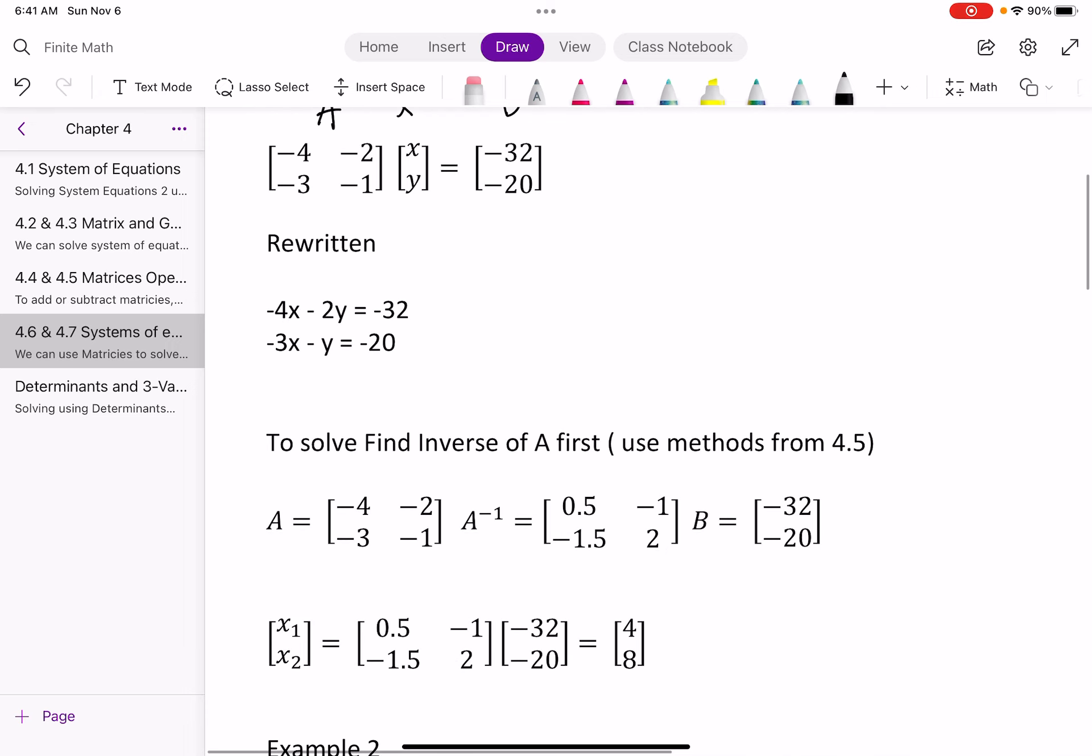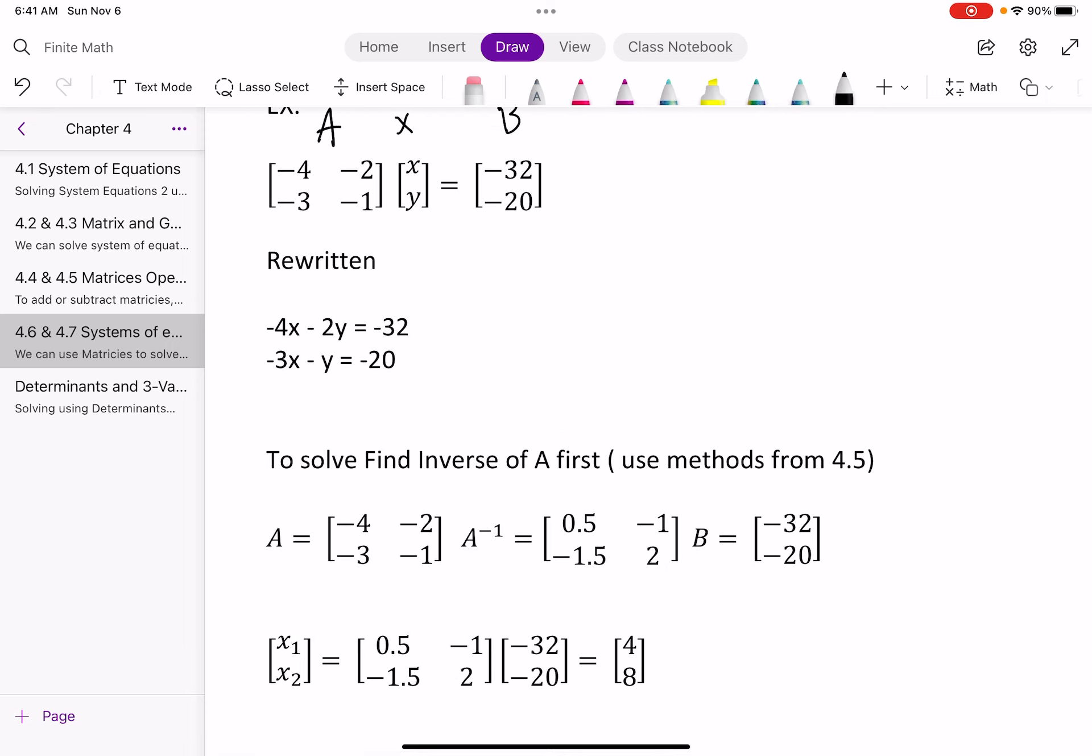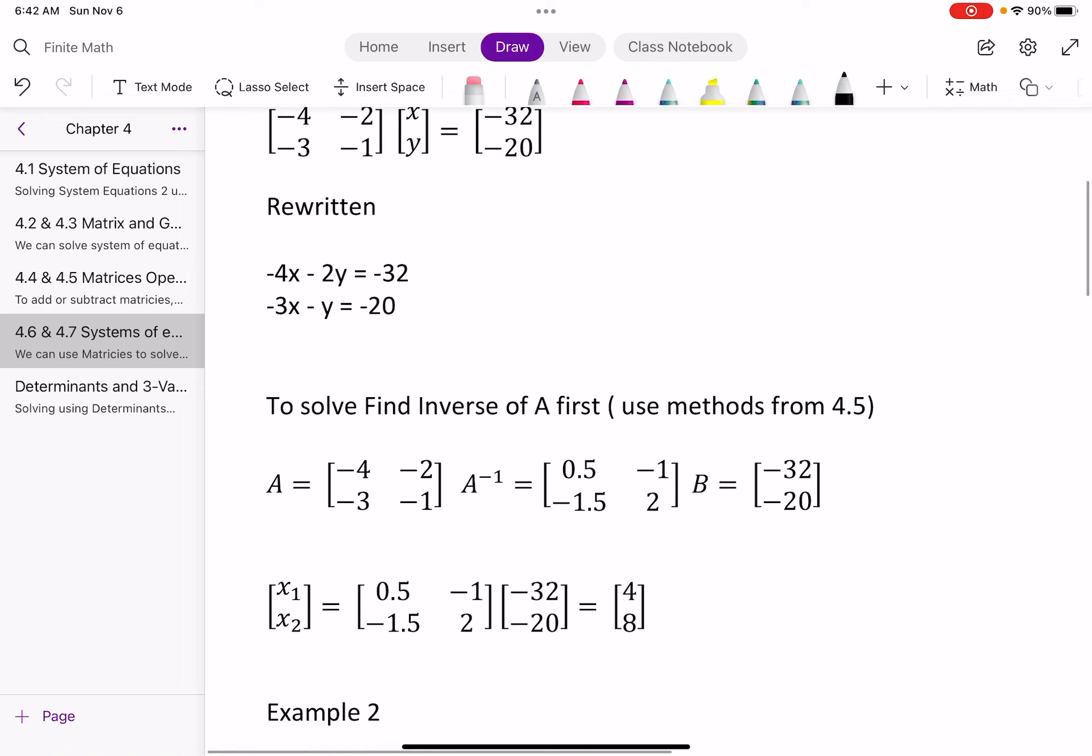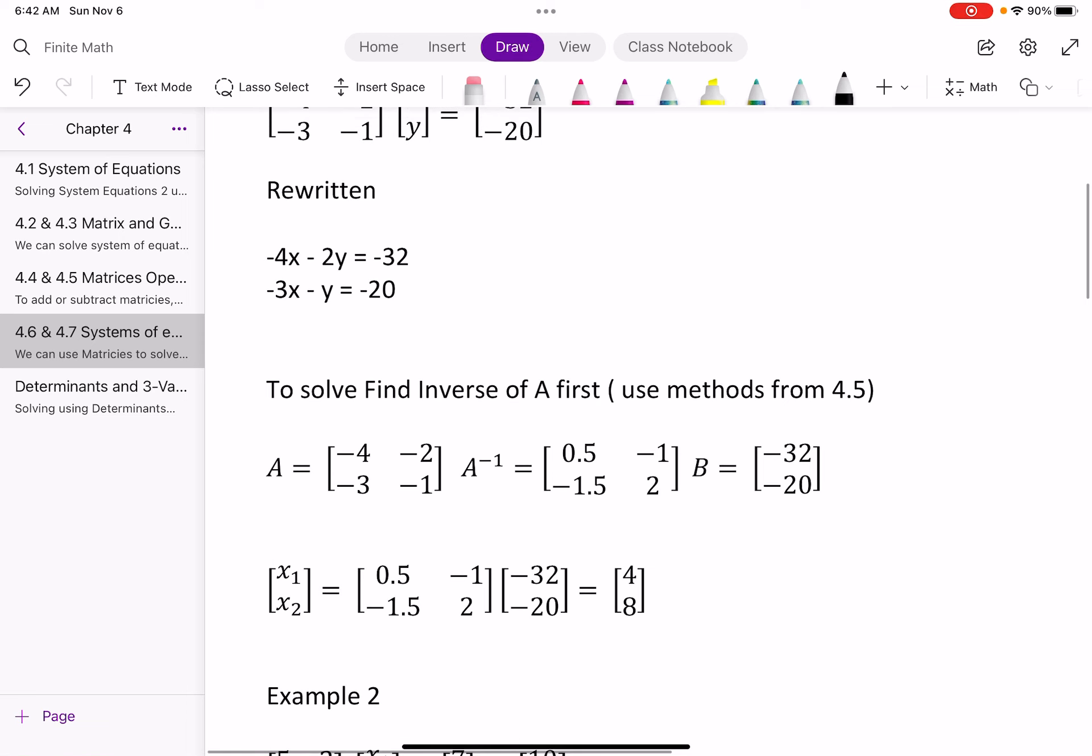And now to solve this, I can go back where I was. So A equals negative 4, negative 3, negative 2, negative 1. I find my inverse of that by doing what we learned in the last video. And then B equals negative 32, negative 20. And now I will replace these with x1 and x2 just to follow along what the book does.